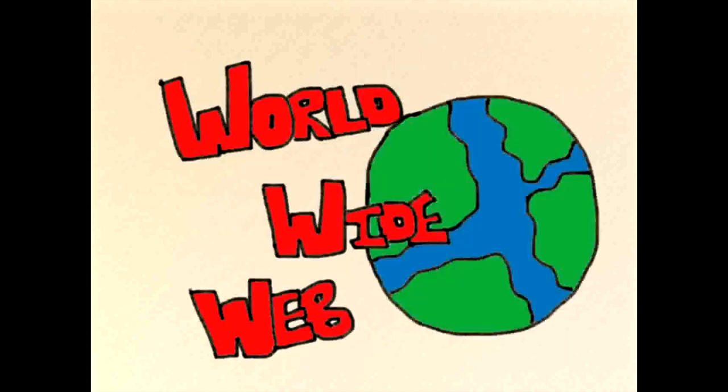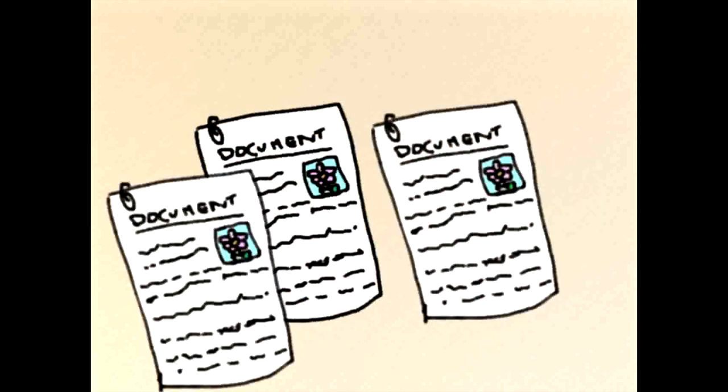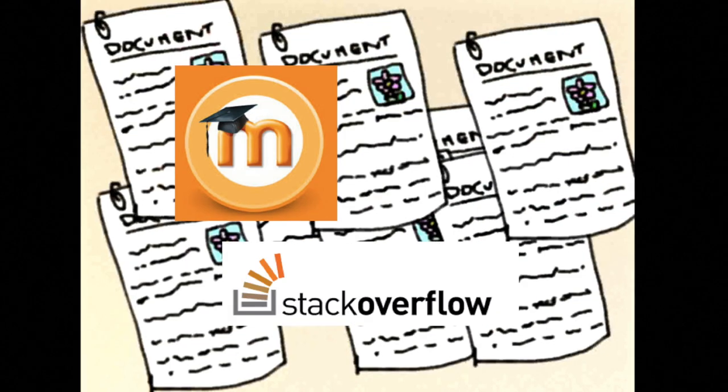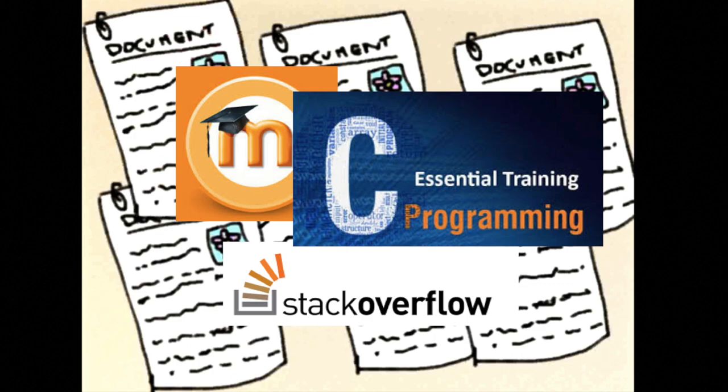But wait! It's 1991 and he can use the World Wide Web. The World Wide Web is an information space that contains documents and other web resources. He can find information about C programmers here.